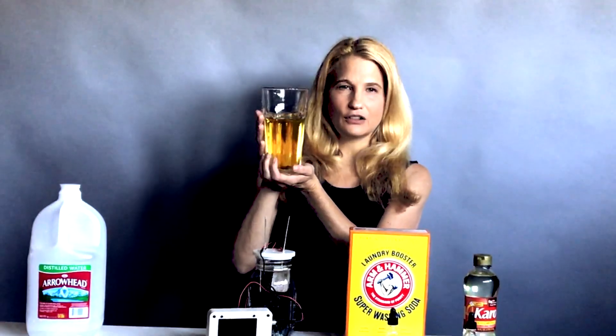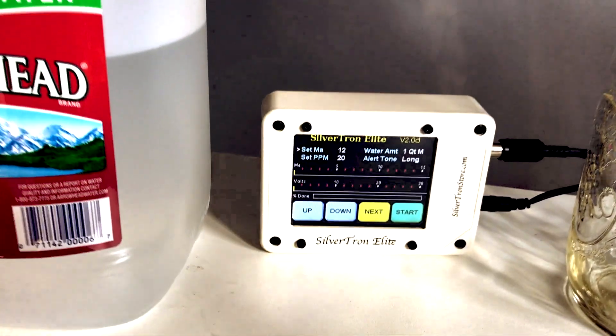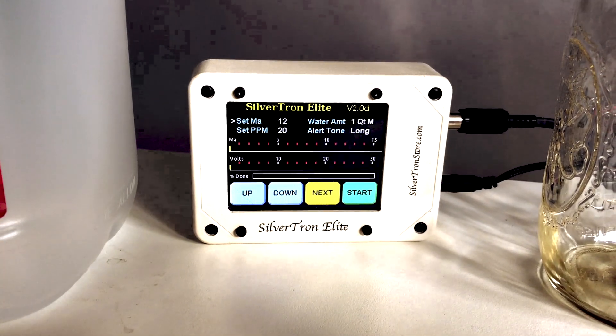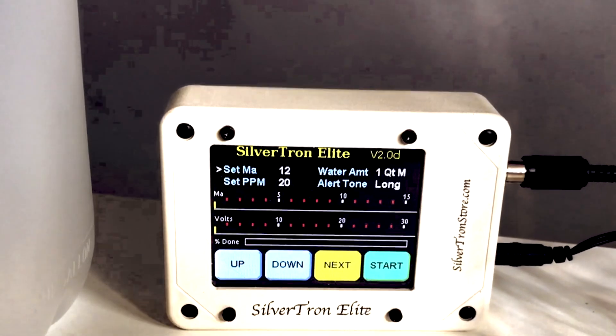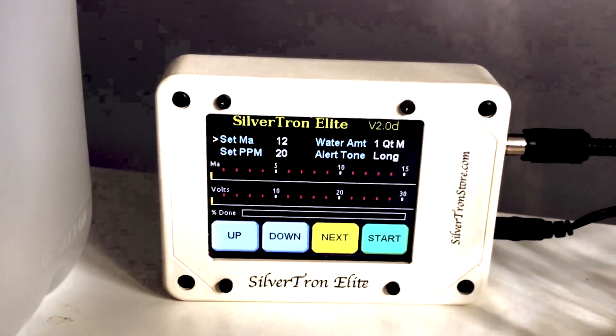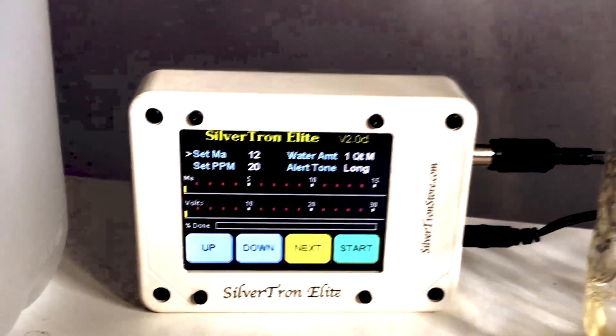20 ppm, which is what this is, means you do not need to dilute the solution once you've prepared it. You're going to need distilled water and your device. I'm using the fabulous Silvertron Elite, one of the best generators on the market, made by a wonderful inventor in Pennsylvania who can only make a few of these a week, so ladies and gentlemen, get in line if you want one. You may end up on a waiting list.